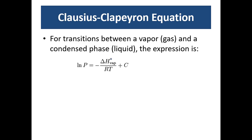The Clausius-Clapeyron equation is an expression for transitions between the vapor and the condensed or liquid phase of a substance. And here is the expression.